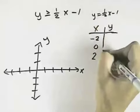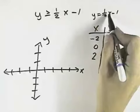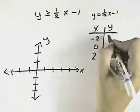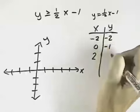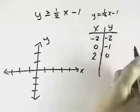So to plot a few points for this linear equation, if x is -2, times 1/2 is -1, minus 1 is -2. 0 times 1/2 is 0, minus 1 is -1. 2 times 1/2 is 1, minus 1 is 0.